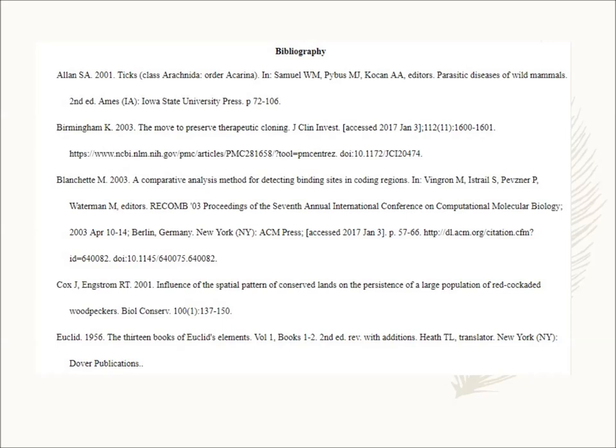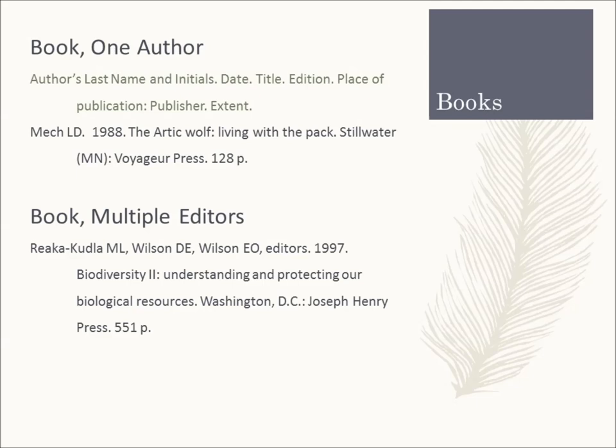Here is a sample bibliography from the UNC Library website, which is a good resource for CSE. This sample shows the basic elements of the CSE name year style. Notice all entries begin with last names and only first and middle initials are used. Year of publication is also important in this format. Dates are written differently as year, month, day. Additionally, only the first word of a title is capitalized and no quotations, italics, underlining, or bold are needed for any entry.